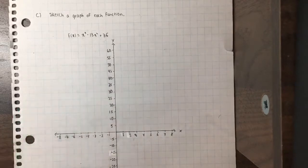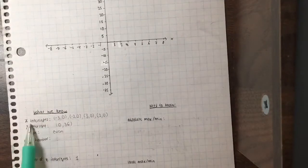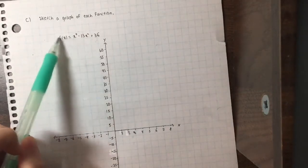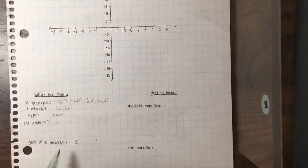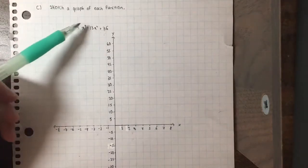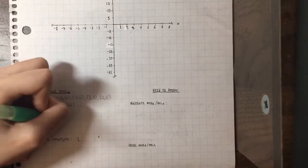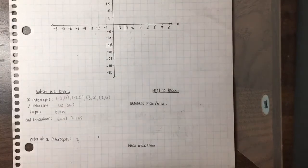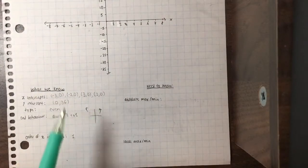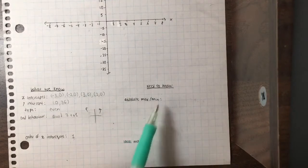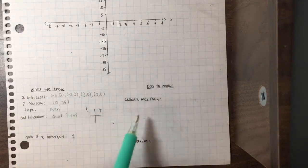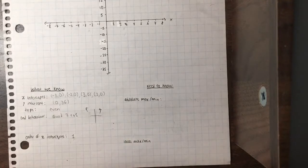Now I'm going to sketch a graph for the first function. From previous work we know: x-intercepts are negative 3, negative 2, 2, and 3; the y-intercept is 36 (since f(0) equals 36); the order of each x-intercept is 1 since all factors are to the first power. The end behavior is even degree with positive leading coefficient, so it extends from quadrant 2 to quadrant 1. Since the graph opens upward, it only has absolute minimums, not an absolute maximum.